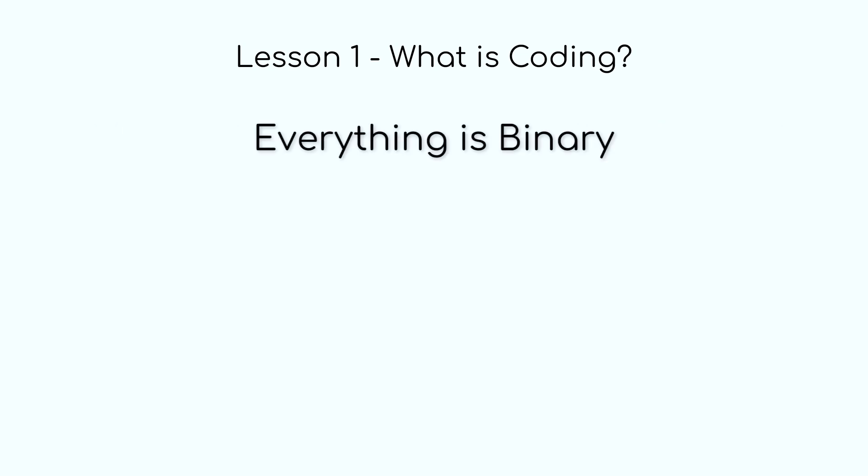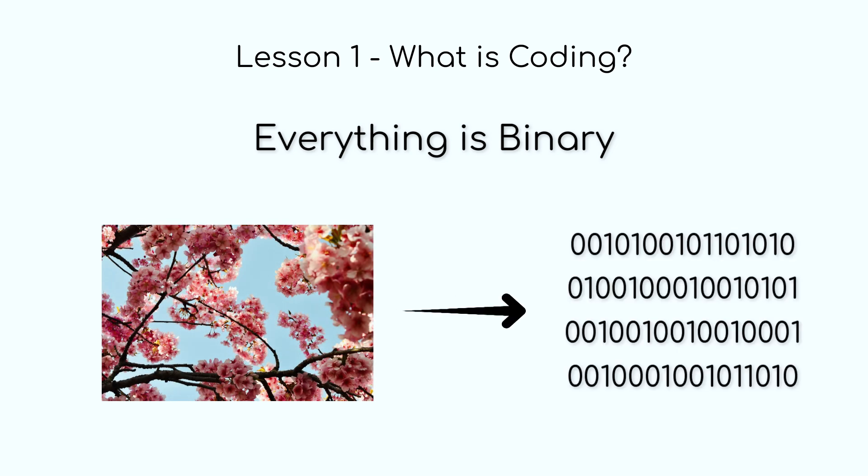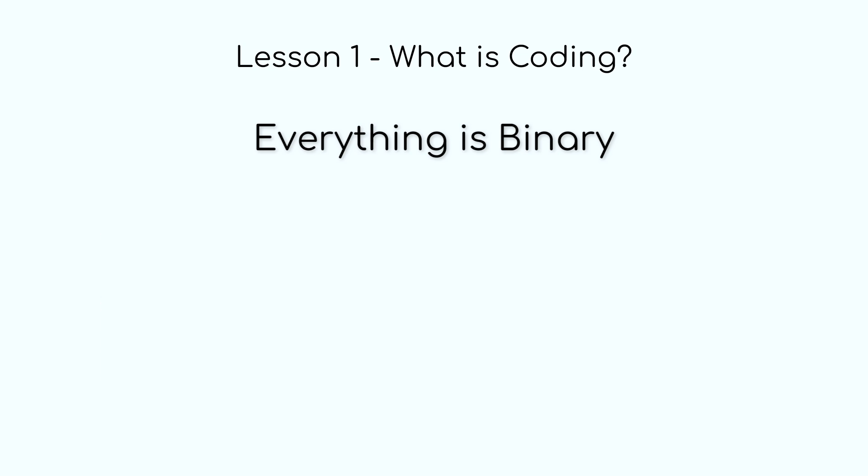Now, this may be a bit hard to understand at first. I mean, how does an image break down into ones and zeros, or a video clip, or even some music? Believe it or not, everything you can hear or see on a computer is basically ones and zeros.